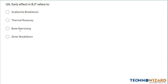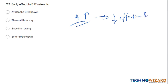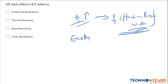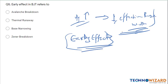Next question: what is early effect? Early effect is the decrease in effective base width with increasing reverse collector voltage. When we increase the reverse collector voltage, there will be a decrease in effective base width. This is known as early effect — also known as base narrowing. Therefore option C is the correct answer.